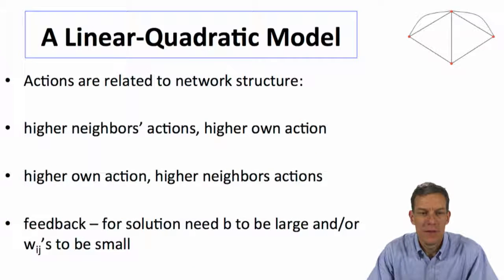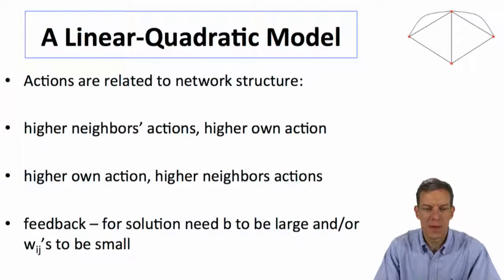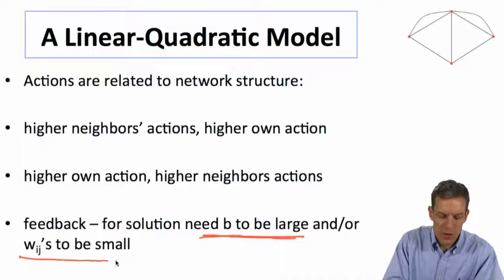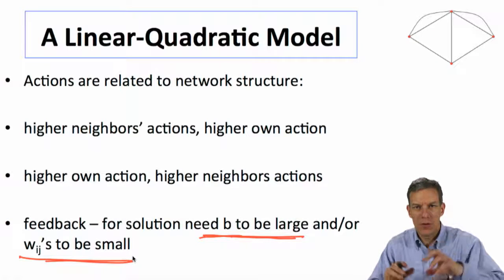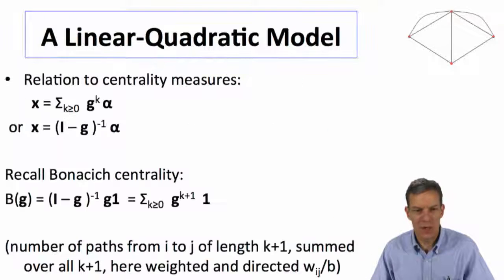Okay, so what's nice about this model? The actions are related to the network structure. We get higher neighbor's actions, higher own action, higher own action, higher neighbor's action, so we get these feedbacks. So in order for a solution, we need the b to be large enough and or the wijs to be small enough so that this actually converges. But once it does, then there's a very nice prediction.